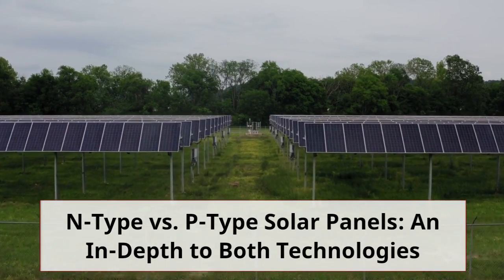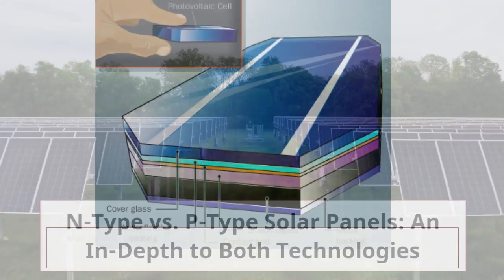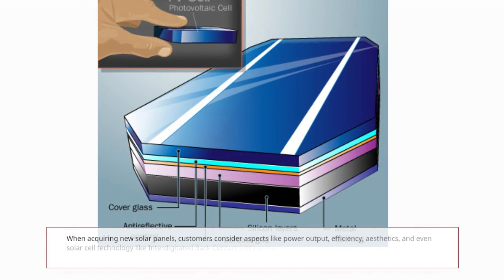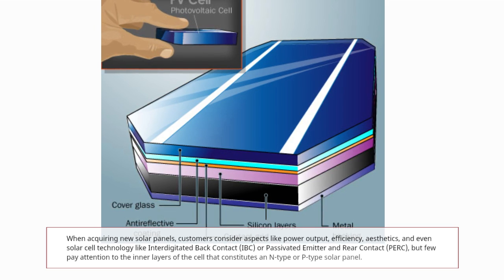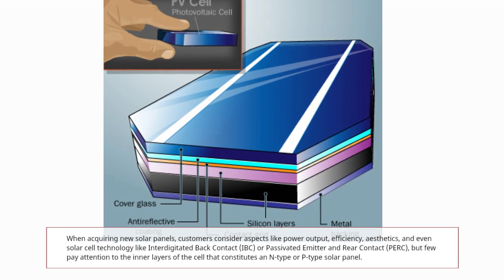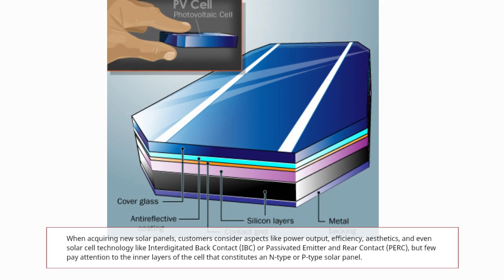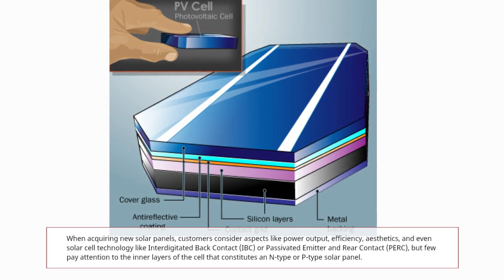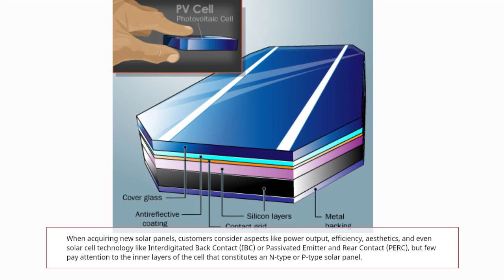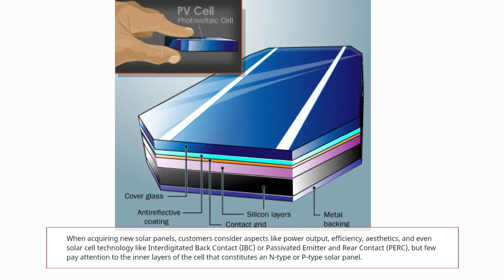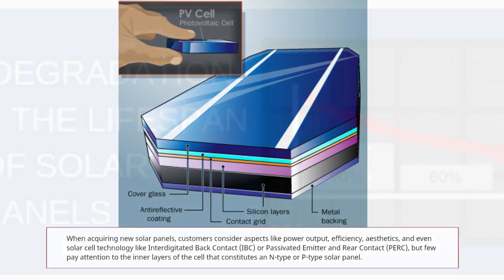N-type vs. P-type solar panels: an in-depth look at both technologies. When acquiring new solar panels, customers consider aspects like power output, efficiency, aesthetics, and even solar cell technology like interdigitated back contact (IBC) or passivated emitter and rear contact (PERC), but few pay attention to the inner layers of the cell that constitute an N-type or P-type solar panel.